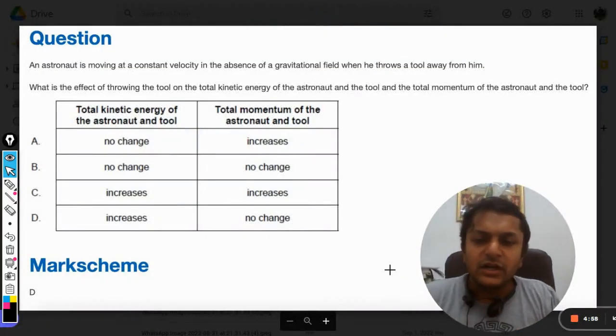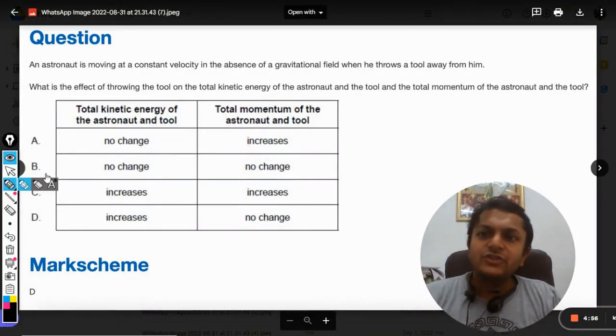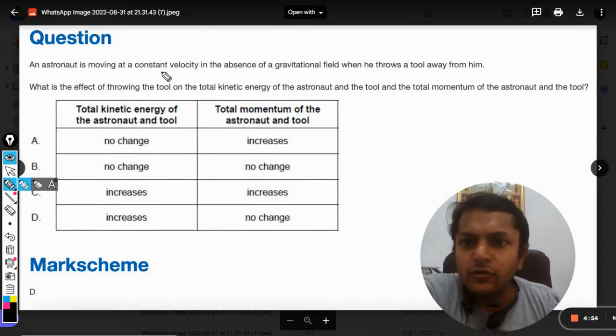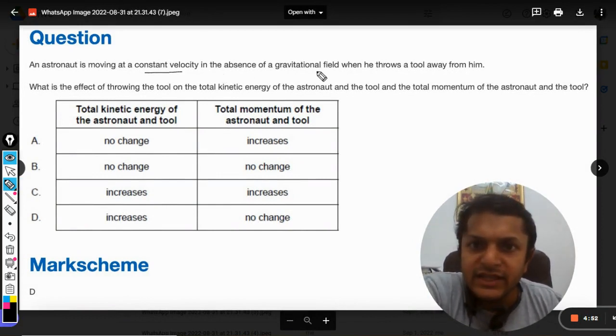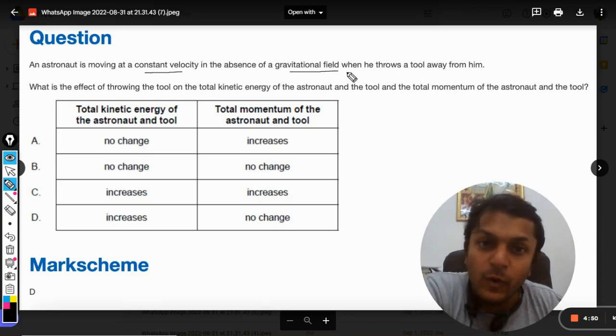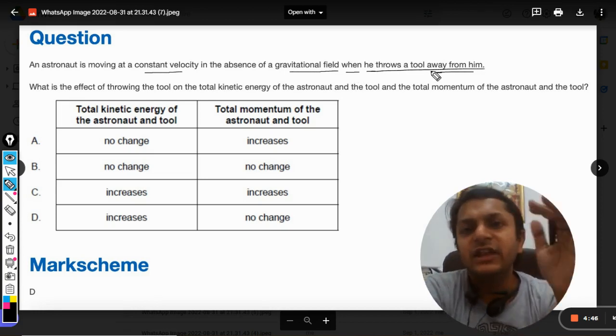Okay, dear students, so let us start with this question. An astronaut is moving at a constant velocity in the absence of gravitational field when he throws a tool away from him. So there is an event.